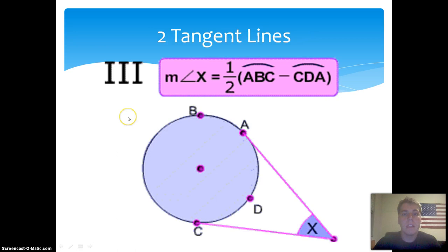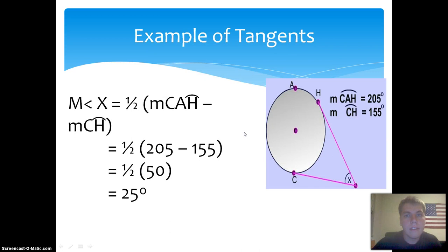Another theorem is the two-tangent line theorem. This theorem states that the measure of angle X equals one half the quantity arc ABC minus arc CDA. For the example, we know that the measure of arc CAH equals 205, and the measure of arc CH equals 155.